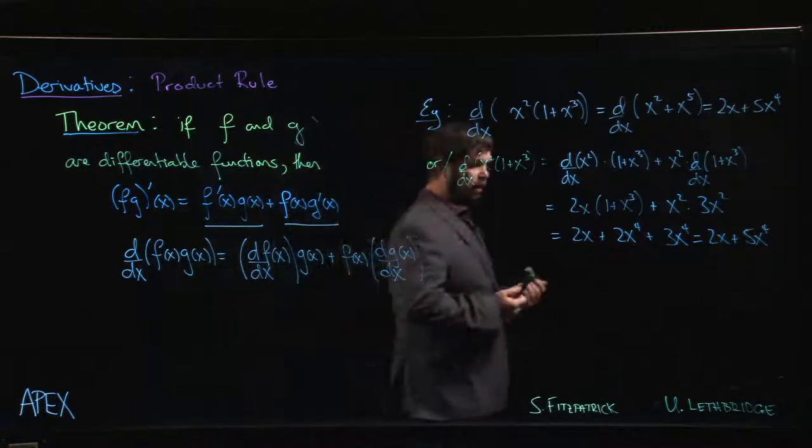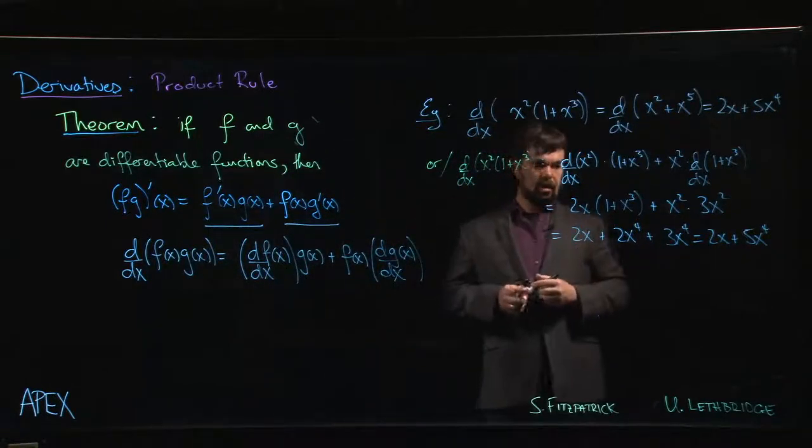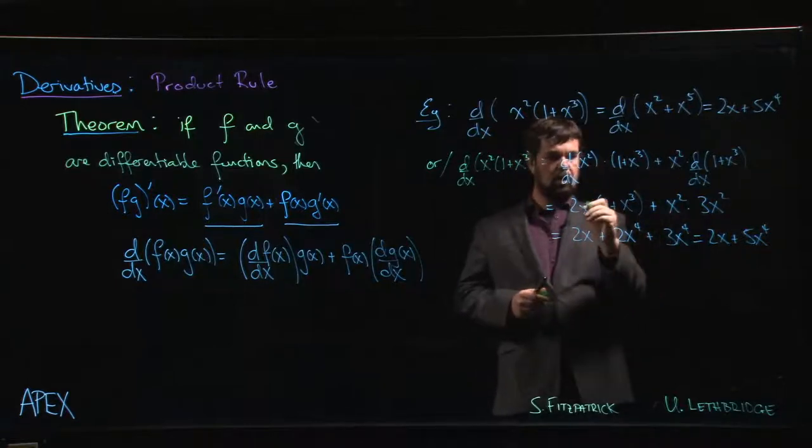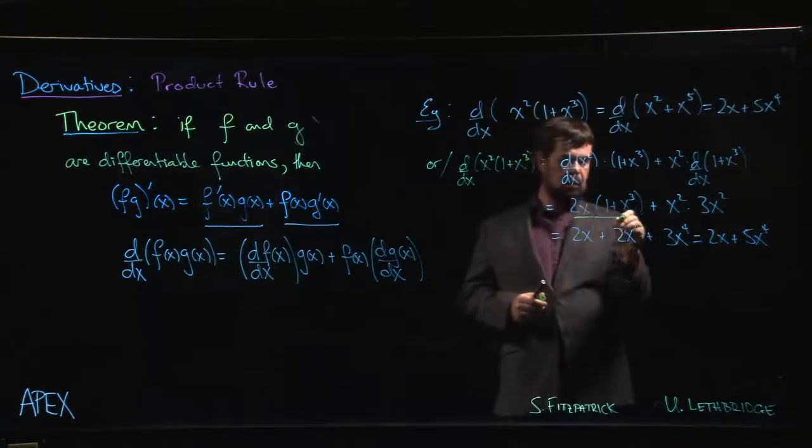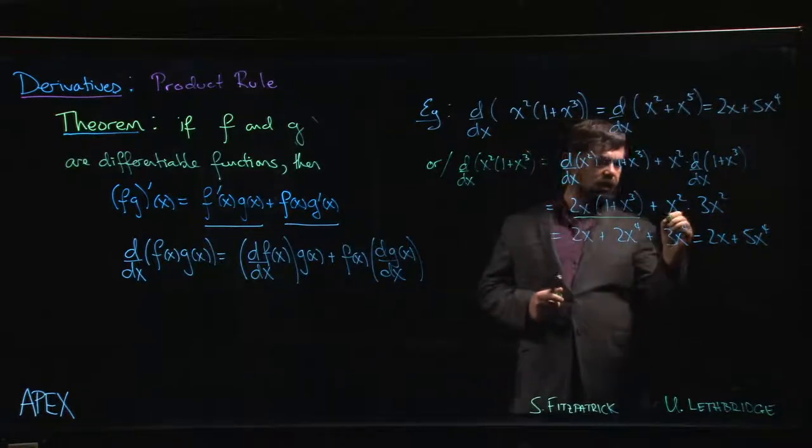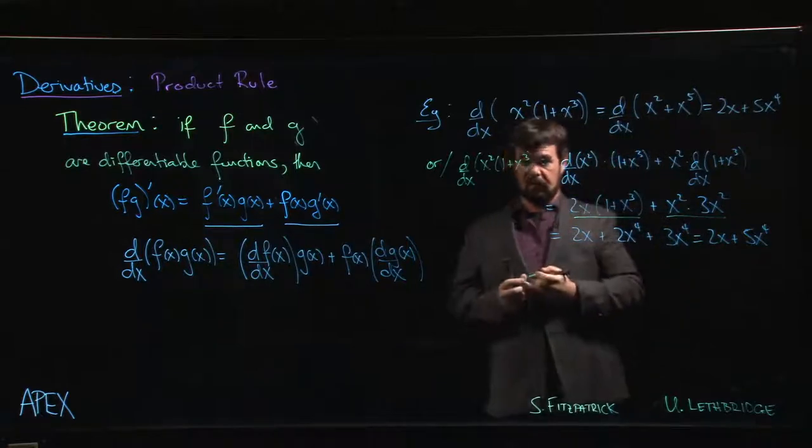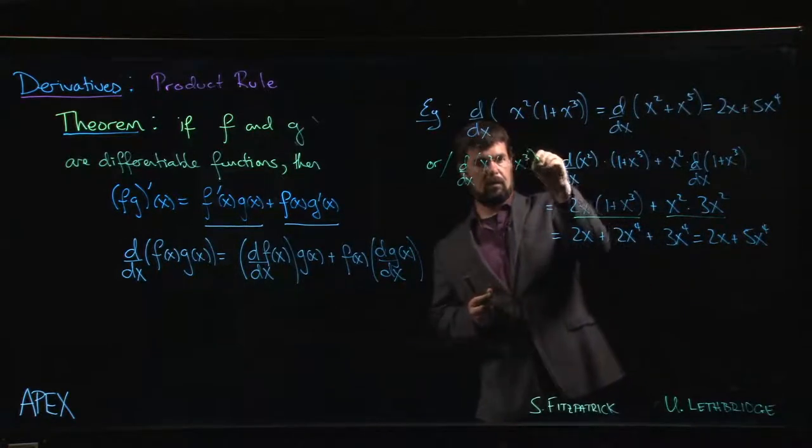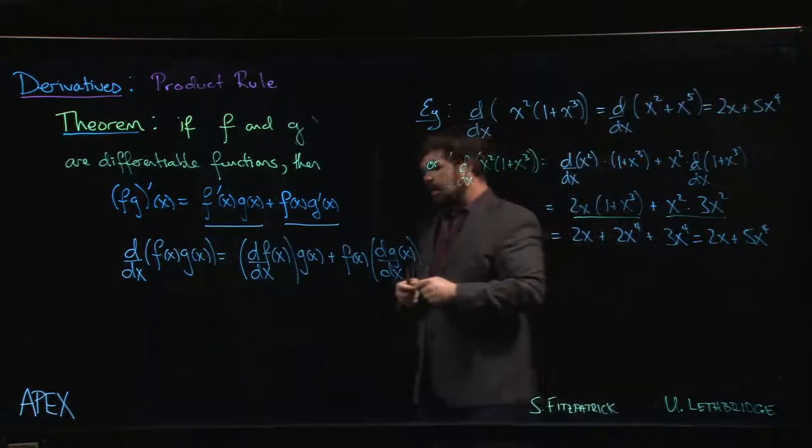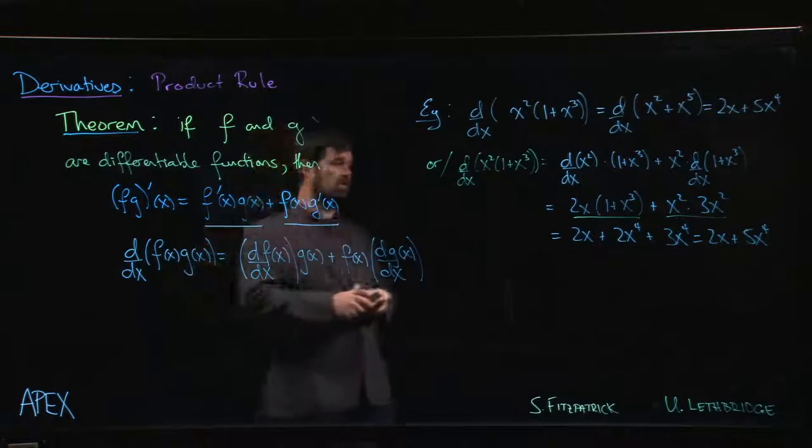The other thing to keep in mind is notice that when you do the product rule, you do always get these two terms: this term involving the derivative of the first factor in the product, and a second term involving the derivative of the second factor in the product. It's not as simple as just saying that the derivative of a product is the product of the derivatives.